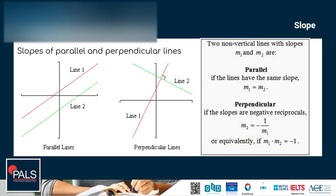Now let's look at the conditions for slopes of parallel and perpendicular lines, starting with parallel lines. Parallel lines are two lines that do not intersect. If two lines do not intersect, they have the same slope. So, if two lines are parallel, they have the same slope; or in other words, if the slopes of two equations are the same, then the lines are parallel.